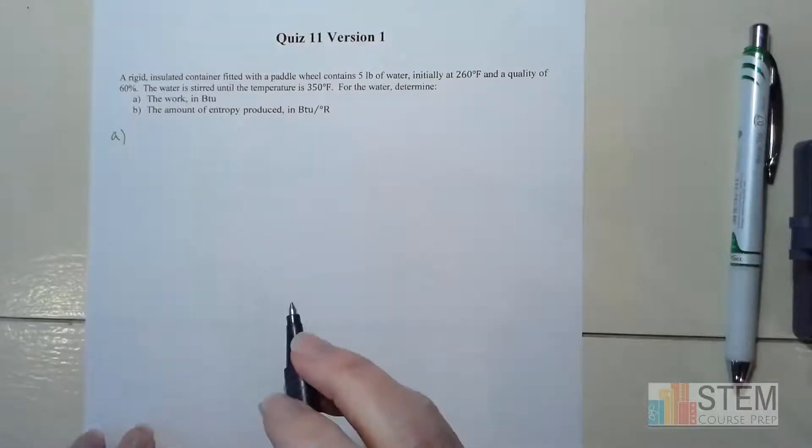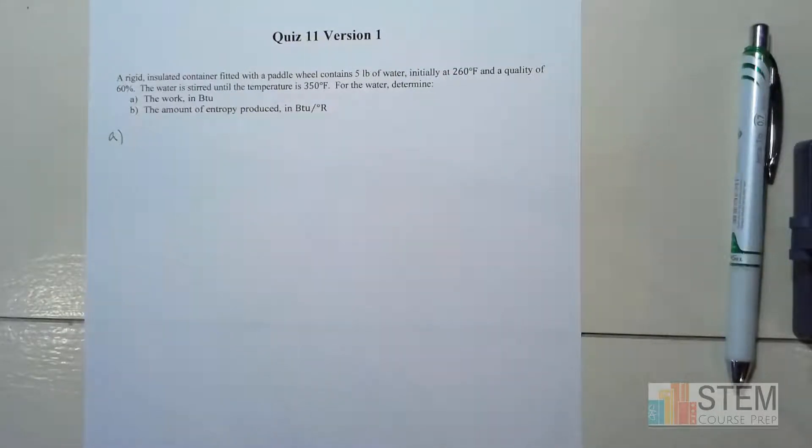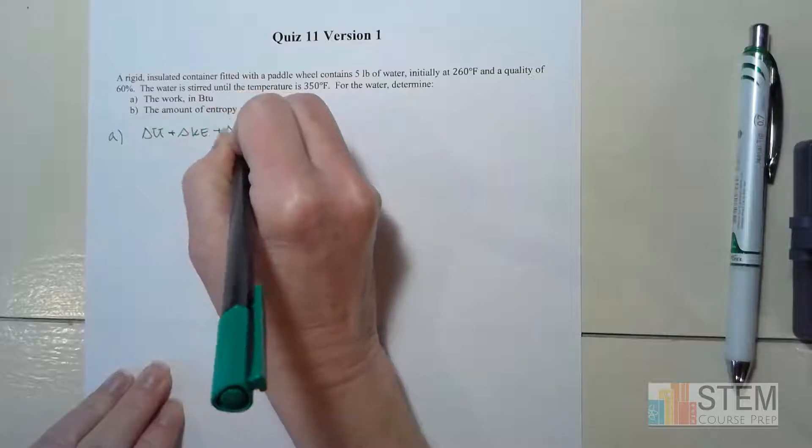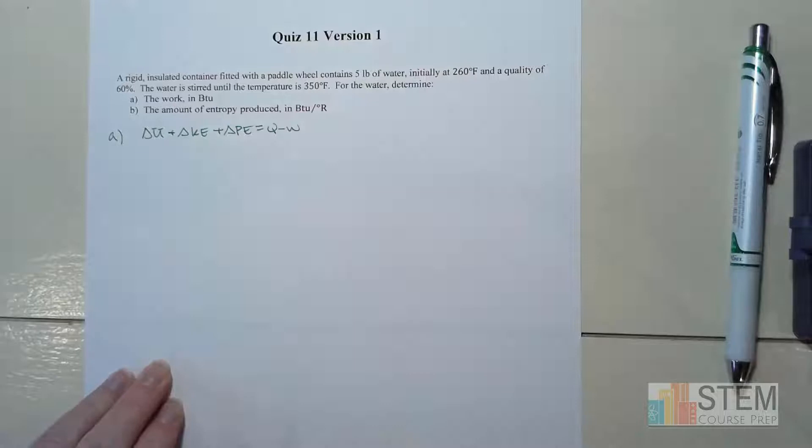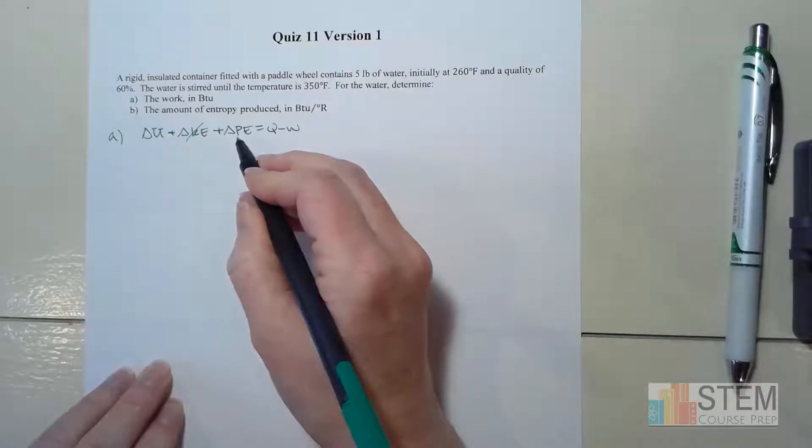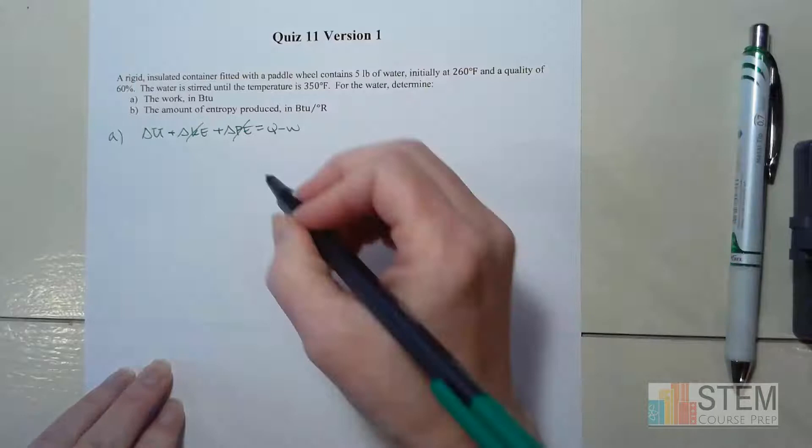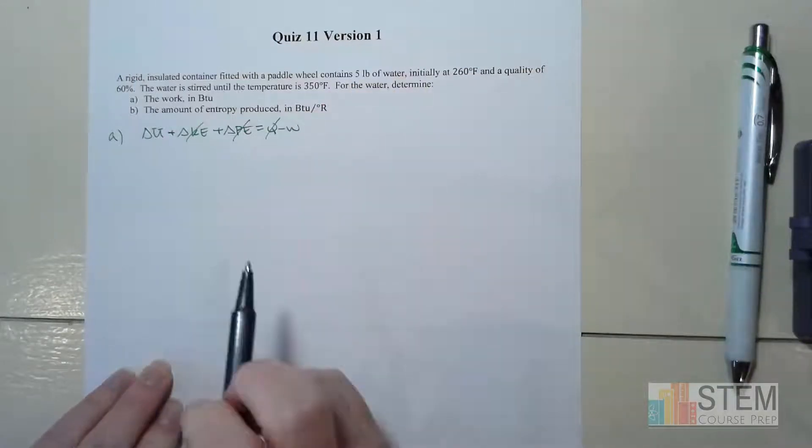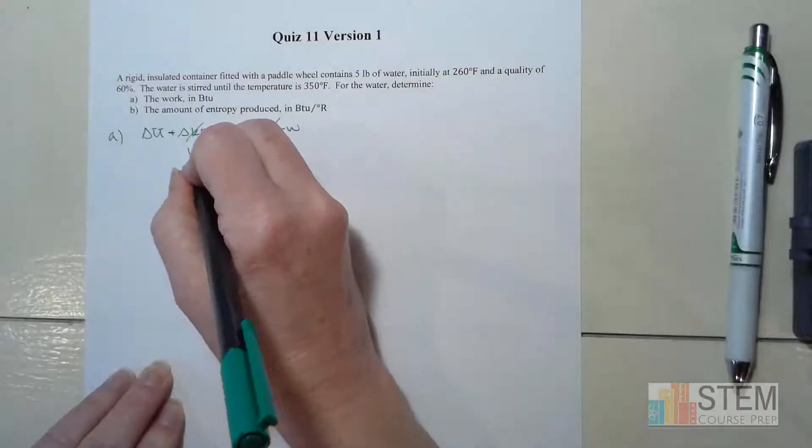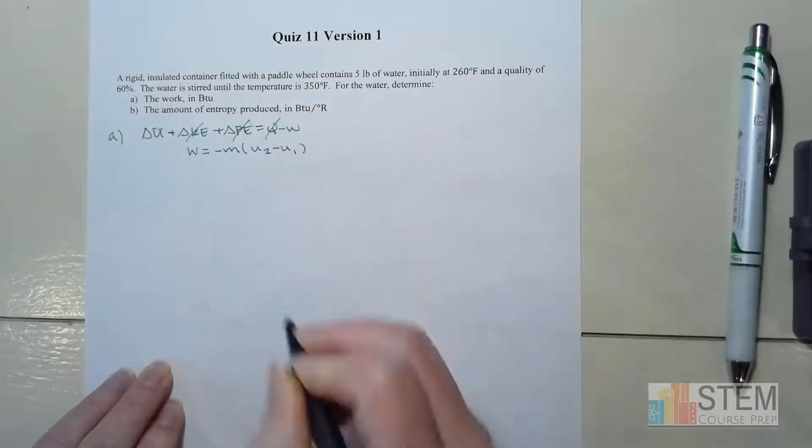With part A, first let's notice this is a rigid insulated container. We don't have fluid going in or out, so we're going to use our basic energy balance equation. Are we going to have kinetic energy? No, that goes away. Any height changes? No. And Q? It's insulated, so anytime we hear insulated, we ignore Q. That leaves us with delta U equals negative work, or work equals negative M times (u2 minus u1). Let's call that equation 1.